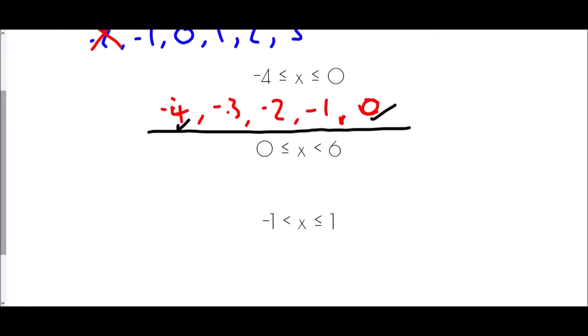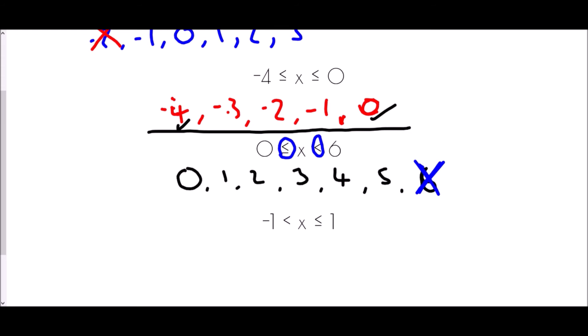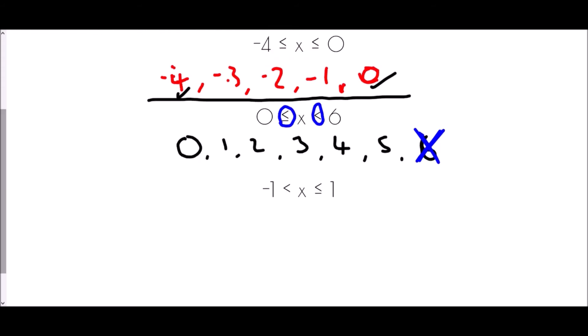For zero less than or equal to x less than six, the options are zero, one, two, three, four, five, six. The left side is greater than or equal to, so zero is fine. But the right end is strictly less than six, so six cannot be included. Our list is: zero, one, two, three, four, five. For the last one, negative one less than x less than or equal to one, the options are negative one, zero, one. Negative one is not included (strict inequality), but positive one is included. So the answer is zero and one.